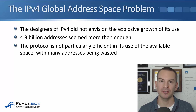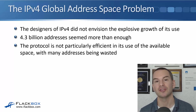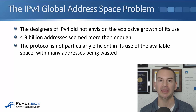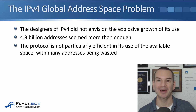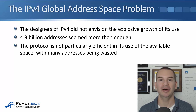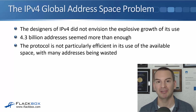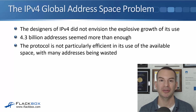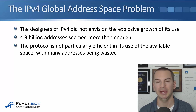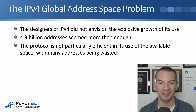The designers of IPv4 did not envision the explosive growth of its use, and 4.3 billion addresses seemed more than enough. They didn't know that everybody would be wanting to get on the internet — not just with one device, but with their laptop, their mobile, their tablet, and so on. And that's just personal users; we've also got all the business users as well. So 4.3 billion addresses seemed like it was going to be more than enough, but of course it wasn't. Also, that 4.3 billion is just a theoretical limit — it doesn't actually get anywhere near that with usable addresses because the protocol is not particularly efficient in its use of the available space, and many of those addresses are wasted.